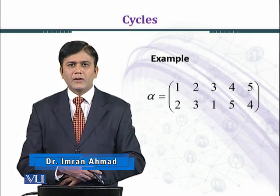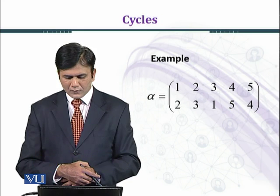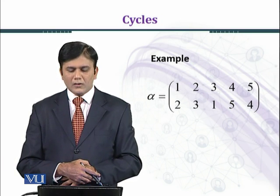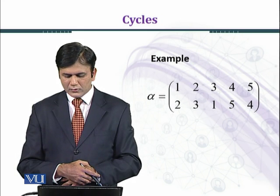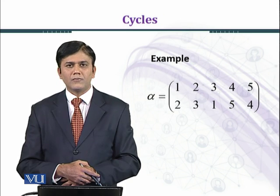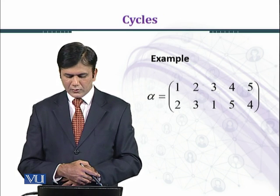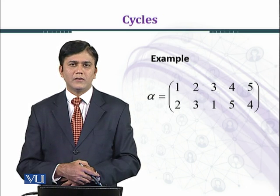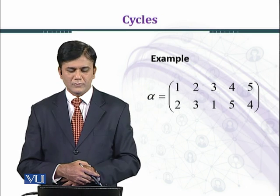We shall take the permutation alpha, which is given as: 1 goes to 2, 2 goes to 3, 3 goes to 1, 4 goes to 5, 5 goes to 4. You can see that 2, 3, 1, 5, 4 are the images under the action of alpha.